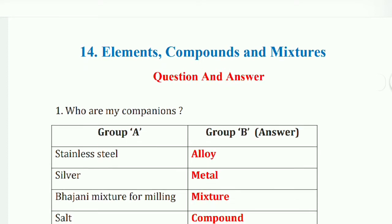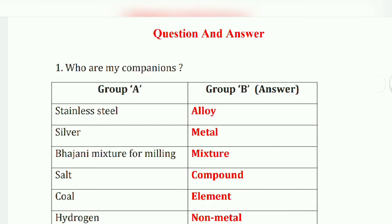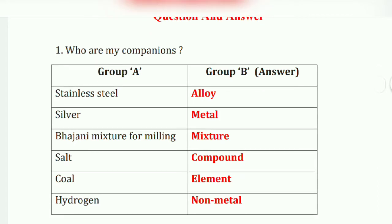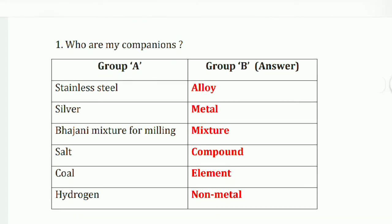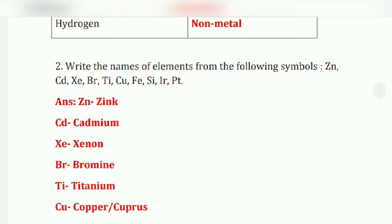First question: who are my companions? Group A — stainless steel: its company is alloy. Silver: metal. Salt: compound. Coal: element. Hydrogen: it's a non-metal.